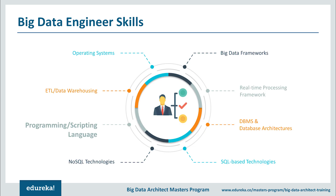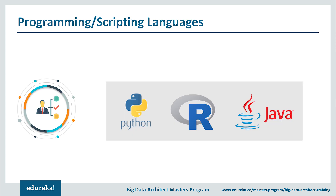Next, we have programming languages. Various programming languages can serve the same purpose, and knowledge of just one programming language is enough — the flavor changes but the logic remains the same. If you're a beginner, you can go ahead with Python as it is easy to learn due to its easy syntax and good community support. Whereas R has a steep learning curve and was developed by statisticians, R is mostly used by analysts and data scientists.